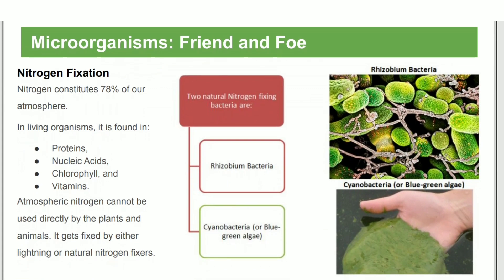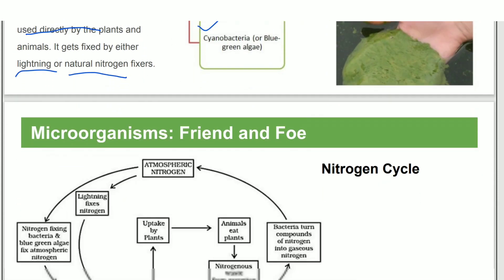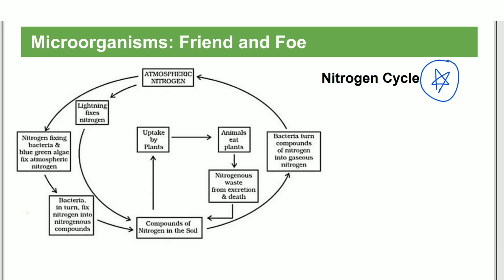The last topic is nitrogen fixation. About 75% of air is nitrogen. Nitrogen is essential for making proteins, nucleic acids, chlorophyll, and vitamins. We cannot directly use atmospheric nitrogen, so natural nitrogen fixers — certain bacteria and blue-green algae — fix atmospheric nitrogen into the soil, making it usable for plants.